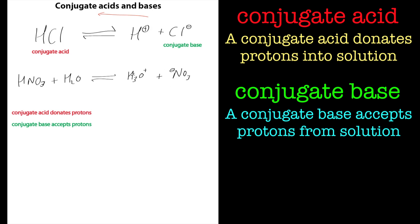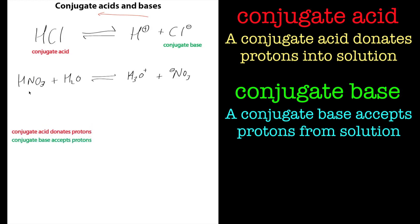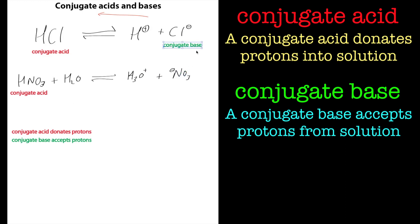Now we've got to identify which one is the conjugate acid and which one is the conjugate base. It's pretty easy to see which one is the proton donor, and you can see straight away that HNO₃ is the conjugate acid. And which one is the conjugate base? Going backwards, it's going to be the nitrate ion. That's pretty straightforward.